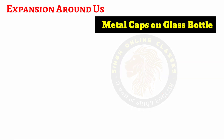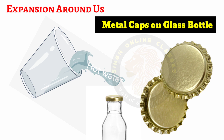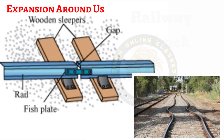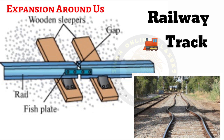Another example: metal caps on glass bottles can be loosened by pouring hot water, because the cap expands on heating and becomes loose, making it easy to open. The expansion of solids also has disadvantages. Railway tracks are made of iron, which expands when heated. During summer, space has to be left between two sections of the rail tracks to allow for this expansion. If this is not done, expansion of the tracks can cause them to bend and come closer, which can cause serious accidents.